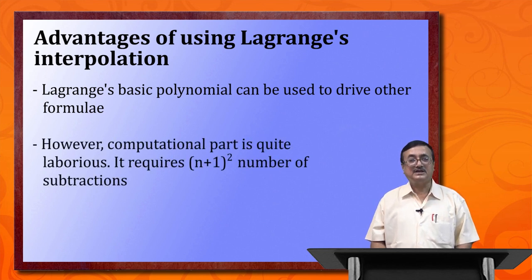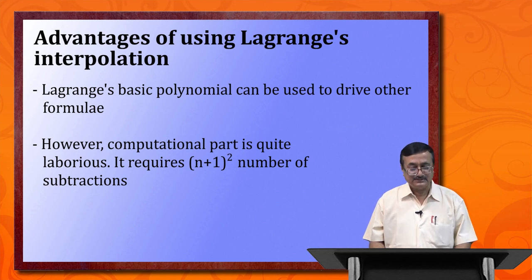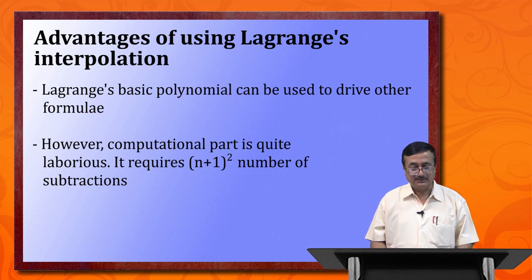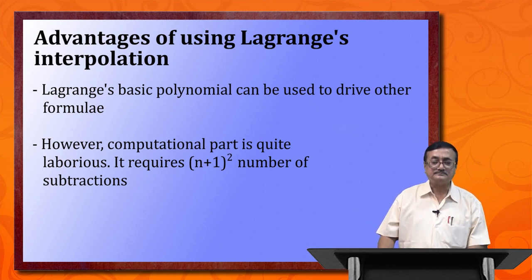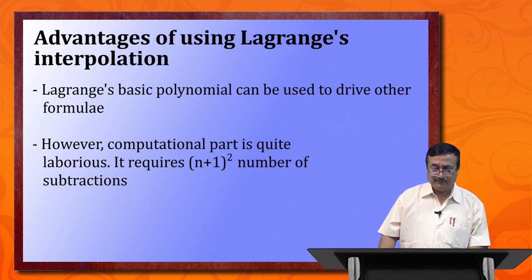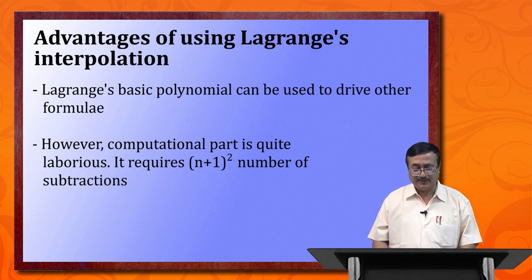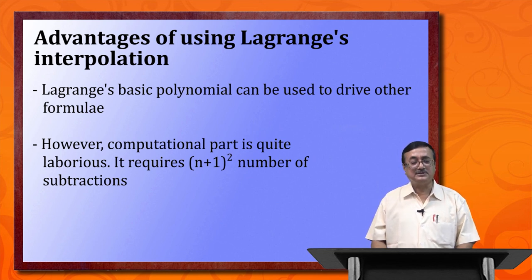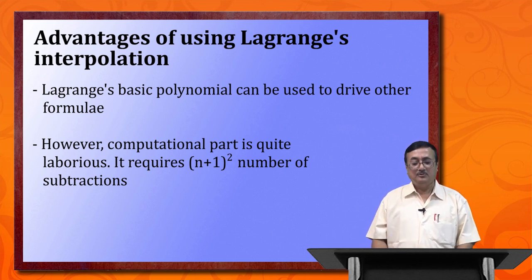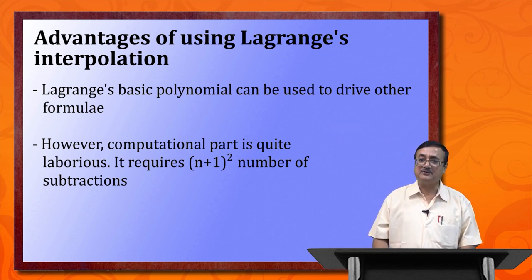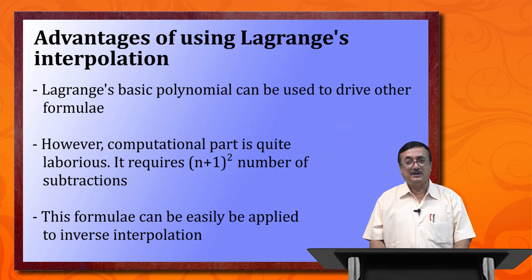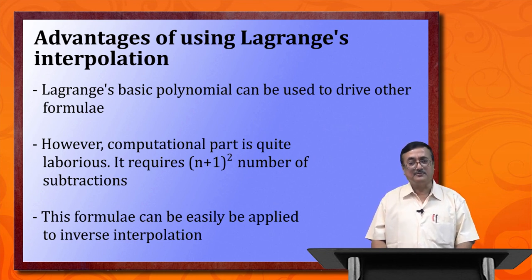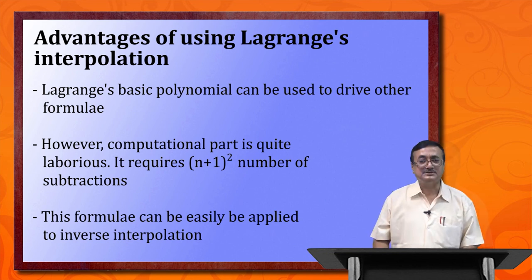However, the disadvantage of Lagrange's interpolation formula is that it requires a lot of computational work — the computational part is quite laborious. It requires a total of 3n² + 5n + 1 arithmetic operations including addition, subtraction, multiplication, and division. For example, if n = 10, we require about 350 arithmetic operations. However, this formula can be easily applied to inverse interpolation as well, which is one of its significant advantages.